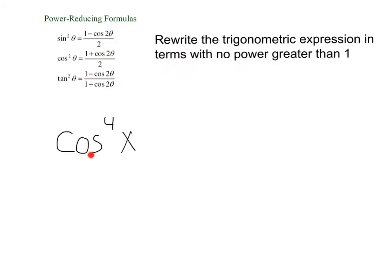Let's try the same thing with cosine to the 4th x. Remember, our first goal is to rewrite this as powers of 2, so we can apply these power reducing identities. What if we change this to cosine squared x squared? Cosine squared x squared would be cosine to the 4th x, so we can do that.